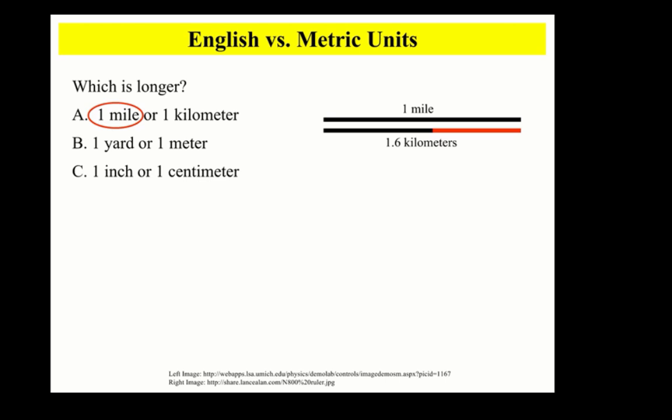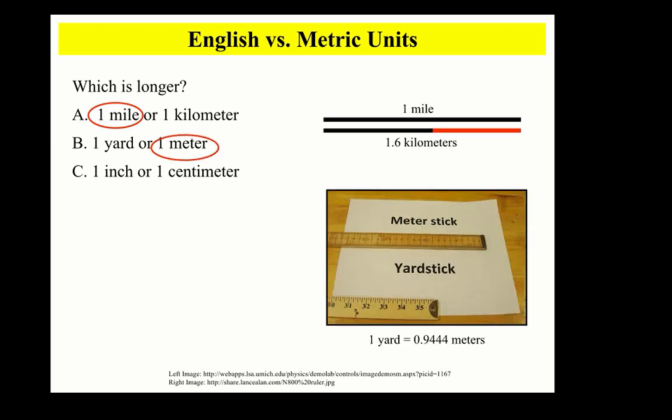What about a yard? Think about a yardstick. Which one's larger, a yard or a meter? In this case, it's actually a meter. One yard is approximately 0.9444 meters.